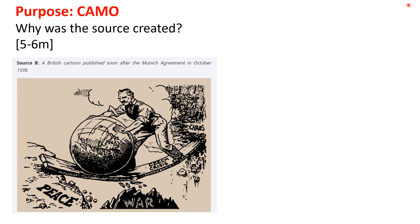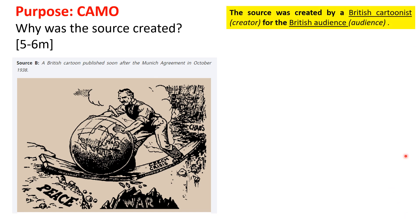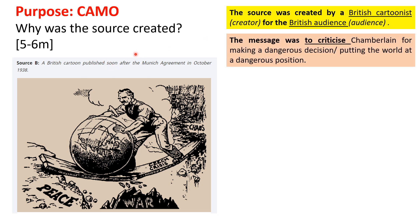So first it is always about identifying creator and audience. Why was the source created? The source was created by a British cartoonist — you can get that from the provenance, which is that few sentences on top of a source. The source was created by a British cartoonist for the British audience. Why do you know it's a British audience? Well, obviously a British cartoon definitely published in some sort of newspaper was for the British audience. Next, the message: the message was to criticize Chamberlain for making a dangerous decision, for putting the world in a dangerous position.